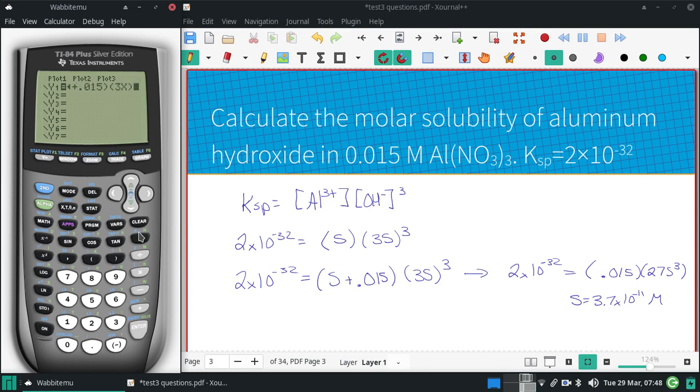And 3X cubed. And then minus 2 times 10 to the negative 32nd. And we're going to calculate a 0. Somewhere between 0 and whatever my first. That's got to be big enough.